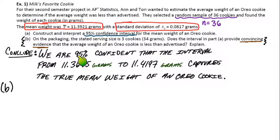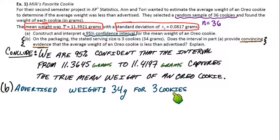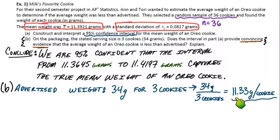So first, let's just convert that to be the weight of one cookie. If there's 34 grams for three cookies, that's what they're advertising. How much would that be for a single cookie? Well, we can just take 34 and divide it by three, which puts us at about 11.33 grams per cookie. So basically, this is what the company's claiming for the weight of an individual cookie.